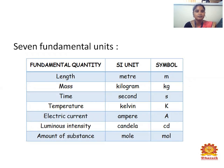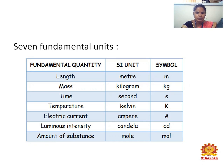What are the seven fundamental SI units? For the fundamental quantity length, the SI unit is meter, with symbol m. For mass, the SI unit is kilogram, with symbol kg. For time, the SI unit is second, with symbol s. For temperature, the SI unit is Kelvin, with symbol K. For electric current, it is ampere, symbol A. For luminous intensity, it is candela, symbol cd. For amount of substance, it is mole, symbol mol.